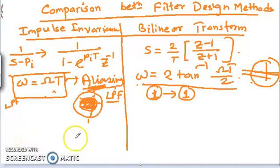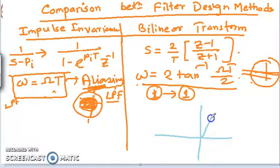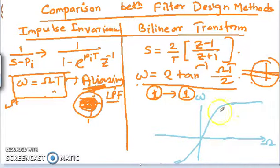Another important difference is the frequency warping effect, which is not present in the impulse invariance method but is present in the bilinear transformation. Frequency warping occurs at higher frequencies. If we draw the mapping of analog to digital frequency using the bilinear transformation, since it involves a tangent function, the curve is linear at lower frequencies but saturates at higher frequency values.